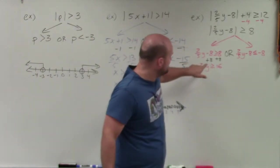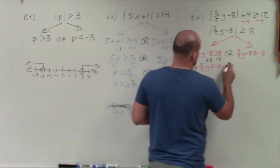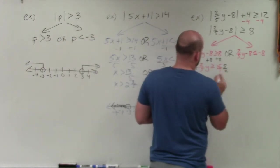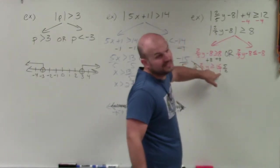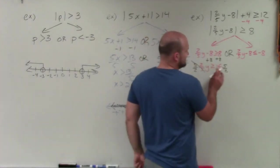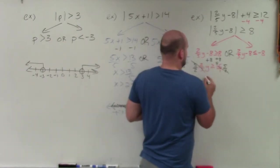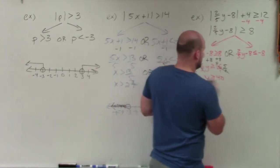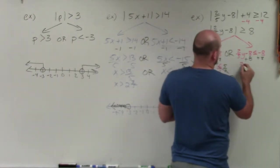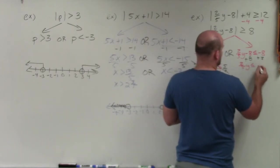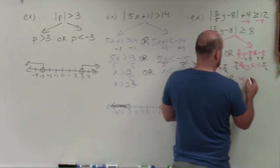Creating my two cases: 2 fifths y minus 8 is greater than or equal to 8, or 2 fifths y minus 8 is less than or equal to negative 8 — negate, flip the sign. For the first case, I add 8 to both sides: 2 fifths y is greater than or equal to 16. To undo a fraction multiplied by the variable, I multiply by the reciprocal 5 over 2, which gives y is greater than or equal to 40. For the second case, I add 8 to both sides: 2 fifths y is less than or equal to 0, then multiply by 5 over 2, giving y is less than or equal to 0.